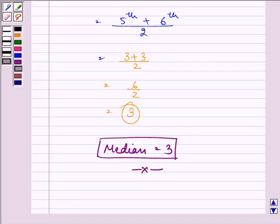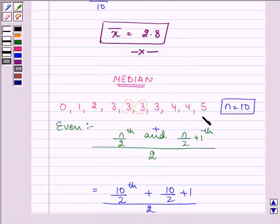Finally, we are left with finding out mode. Mode is the value of the observation which occurs most frequently. That is, the observation with the maximum number of frequency is called mode.